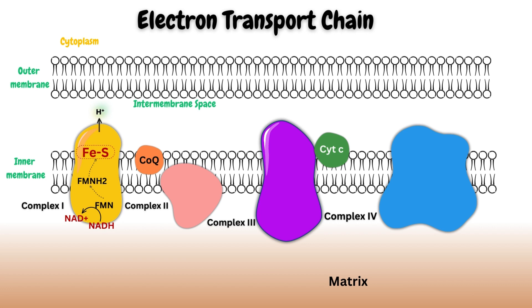Complex 2, also known as succinate dehydrogenase, also functions in the citric acid cycle or Krebs cycle, where it oxidizes succinate to fumarate, reducing FAD to FADH2. Electrons are passed on to iron-sulfur center and transferred to ubiquinone or coenzyme Q. But complex 2 cannot pump protons into intermembrane space like complex 1, because FADH2 reduction releases less energy than reduction of NADH.